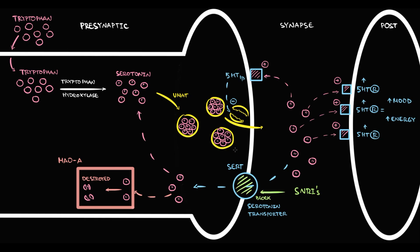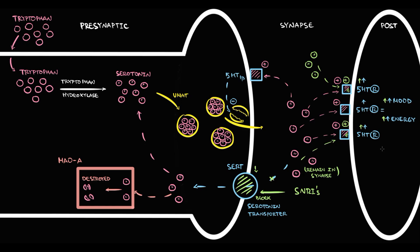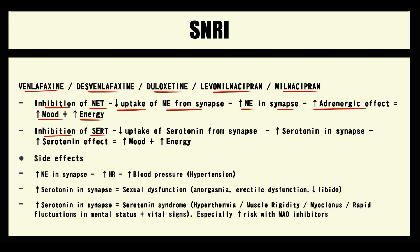Serotonin-norepinephrine reuptake inhibitors inhibit the function of the SERT transporter. With inhibition of SERT, the reuptake of serotonin into the presynaptic neuron decreases, so more serotonin molecules remain in the synapse, where they begin to bind to serotonin receptors, additionally stimulating them. Because the serotonin transporter is now blocked, even more serotonin accumulates in the synapse. The higher the amount of serotonin molecules in the synapse, the higher the stimulation of serotonin receptors, and thereby the better the mood and the more energy increases.